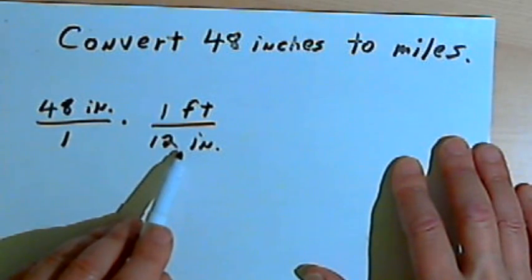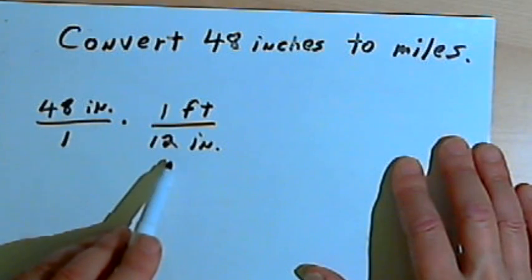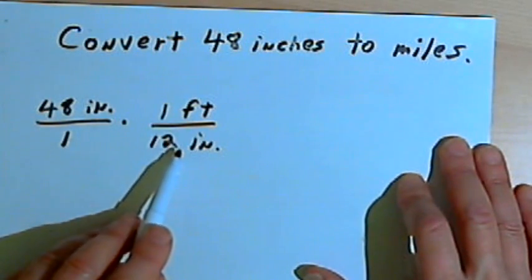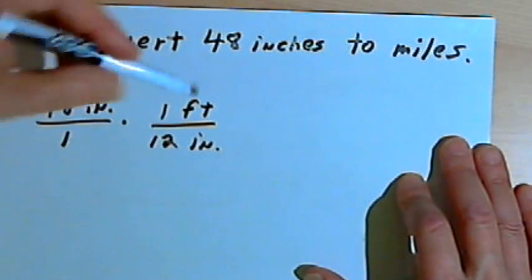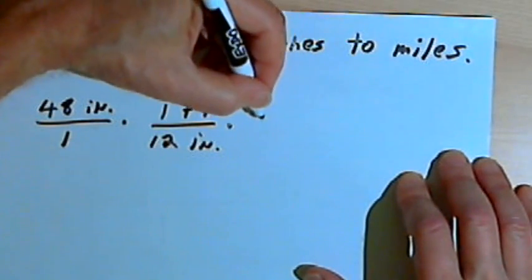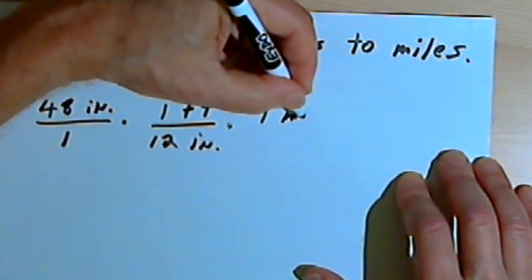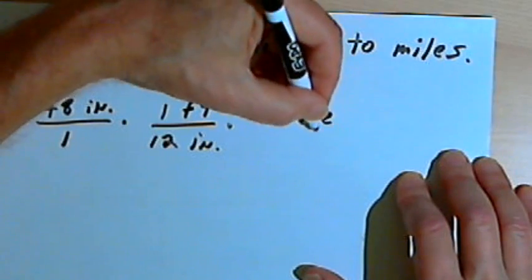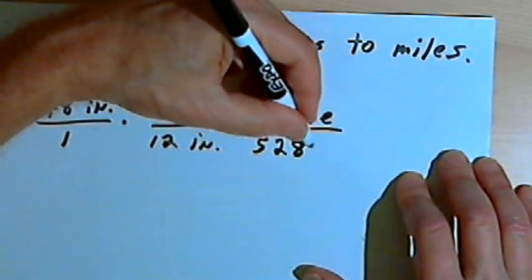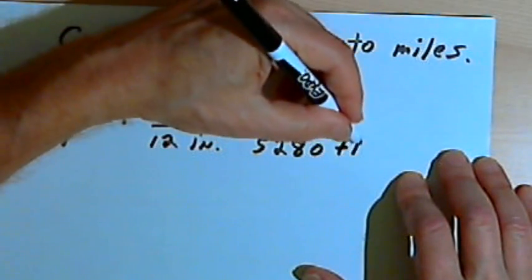And that fraction again equals 1, because 1 foot is the same as 12 inches. So it's a fraction where the numerator and denominator are the same. Once I get the number of feet, I'm going to want to convert that into miles. So 1 mile, I'll make that the numerator, is equivalent to 5,280 feet. That'll be the denominator.